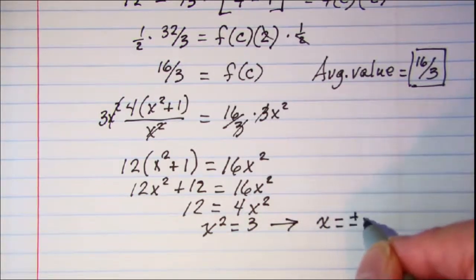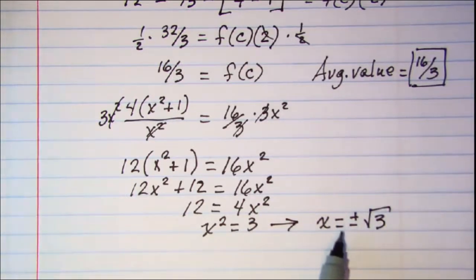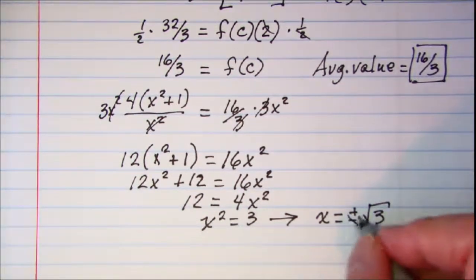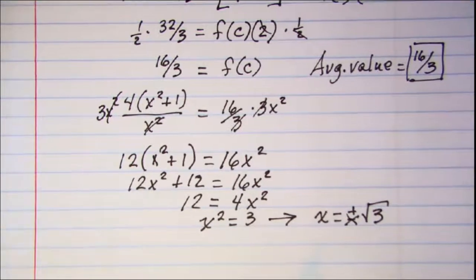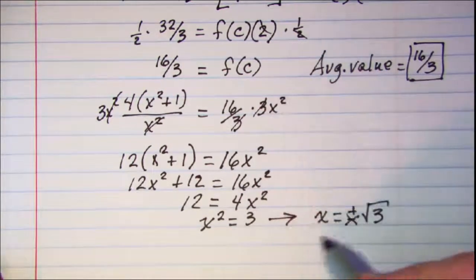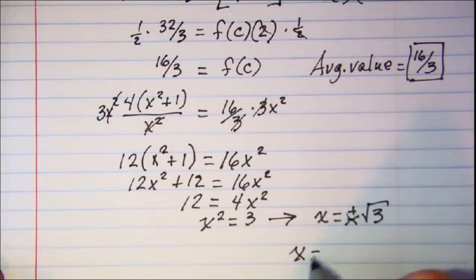Which means that x is equal to plus or minus square root of 3. Now I want the values of x that are in the interval from 1 to 3 so the negative is out of there and so my answer to the second part of that question is just x is equal to a positive square root of 3.